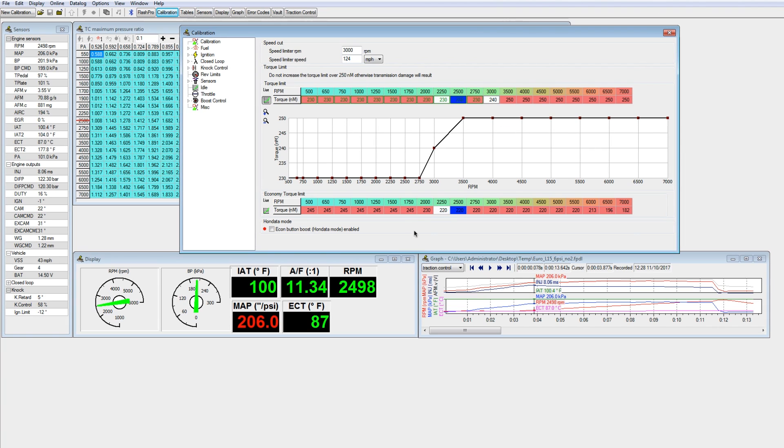So how does the computer limit torque? Well, let's have a look at this value here at 3000 rpm. The computer has a torque limit of 240 Newton-meters.